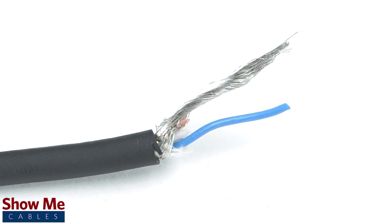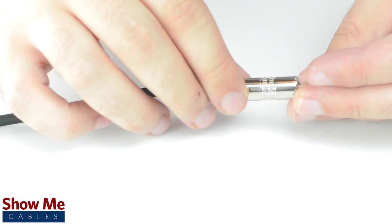Since this is a mono connector, our cable will need one center conductor and a shield. Unscrew the strain relief and slide it onto the audio cable.